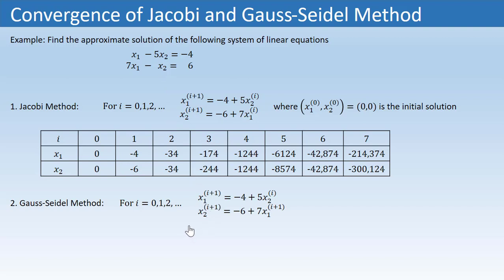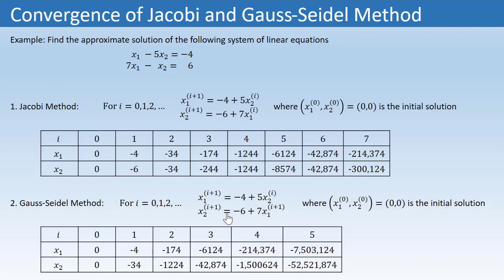Here is the corresponding Gauss-Seidel iterative scheme. If we take the initial guess as (0, 0), then the approximate solutions up to the fifth iteration can be seen in this table. We started from initial solution (0, 0) and we see that the value of x1 is not approaching any fixed value; similarly x2 is not approaching any fixed value. So the solution is divergent. The question is: is there any technique through which we can verify whether the given system of linear equations has a convergent solution or not?